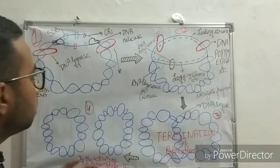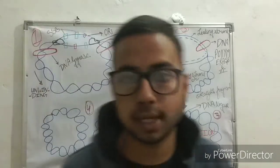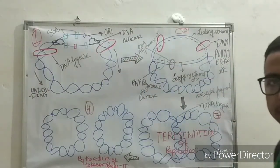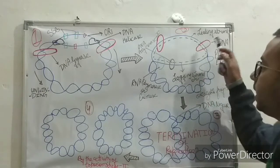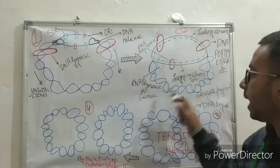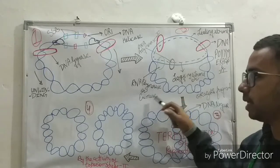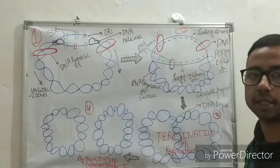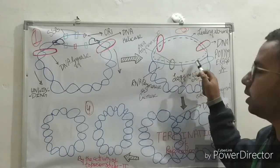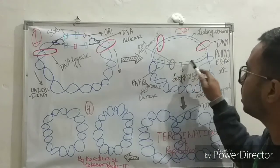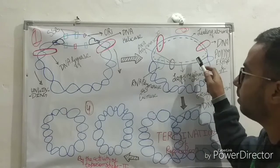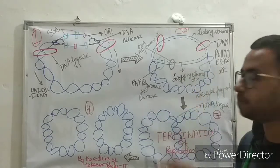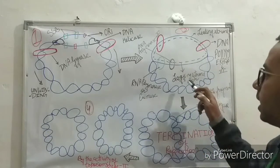After the first process, the second process starts in which there is formation of leading and lagging strands. The lagging strand is formed by DNA polymerase or primase, an enzyme which is used for the synthesis of RNA primer. The dotted line represents the RNA primer.